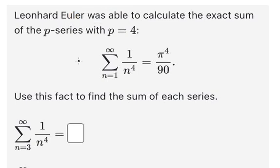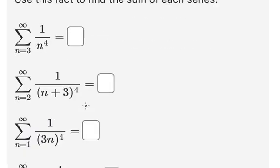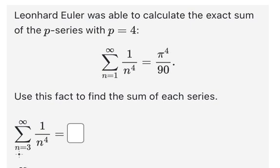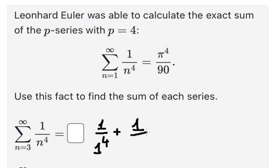Hello everybody, so today I want to show you how to answer question number one. We can see that they start at n equals to number three, but on this one they start at n equals to number one. So in this case we need to put about 1 over 1 to the power of four, and this one we have 1 over 2 to the power of four, and this one we put in here.